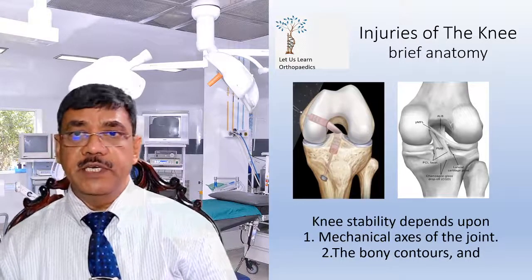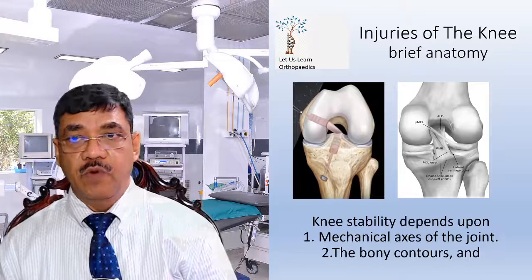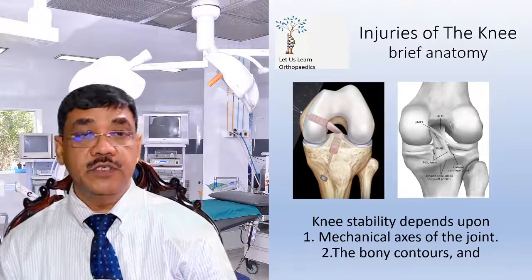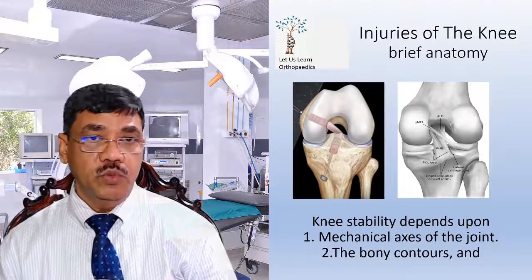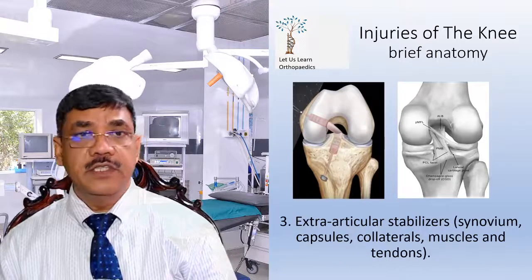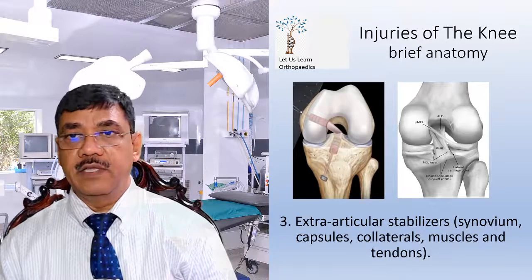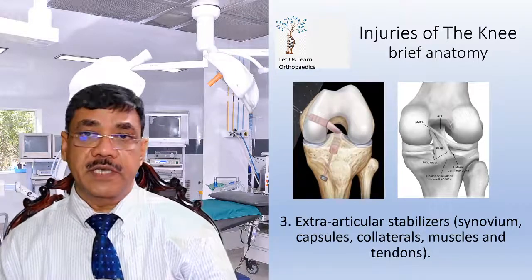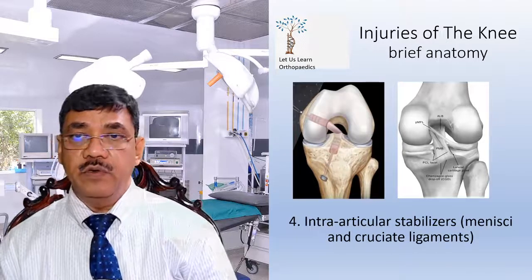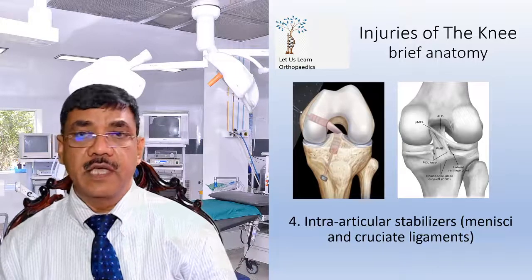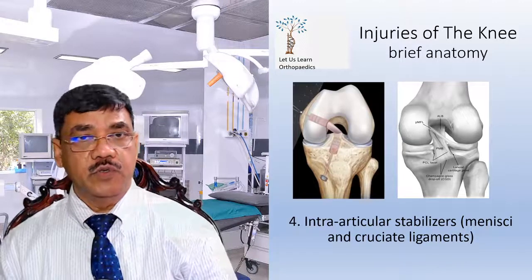Knee joint stability depends upon: one, the mechanical axis of the joint; two, the body contours; three, extra-articular stabilizers like the synovial capsule, collaterals, muscles, and tendons; and four, intra-articular stabilizers like the menisci and the cruciate ligaments.